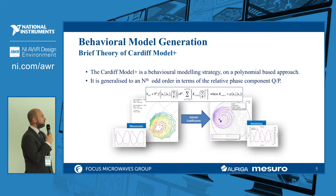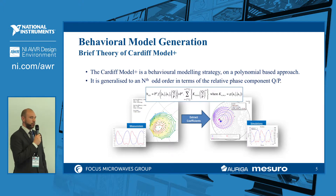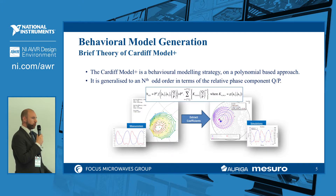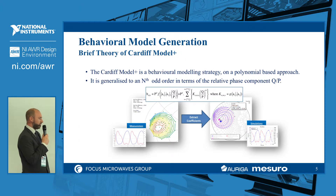Cardiff Model Plus is a behavioral model based on polynomial functions, generalized to nth order in terms of the relative phase components. To extract the model, we first do vector load pull measurements, then generate the model by extracting the coefficients, which are saved into a file used as a model in the simulator, where we can simulate the measured device.